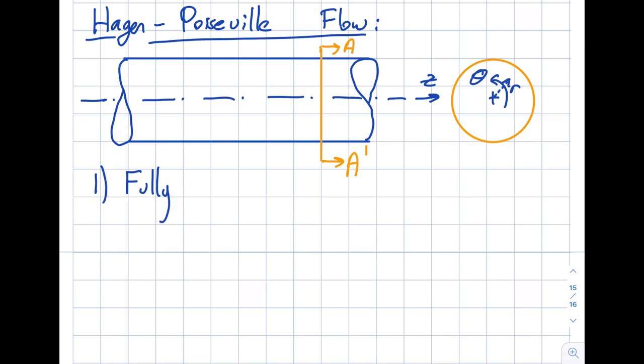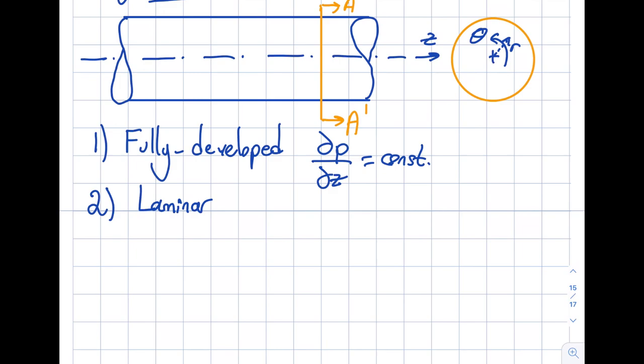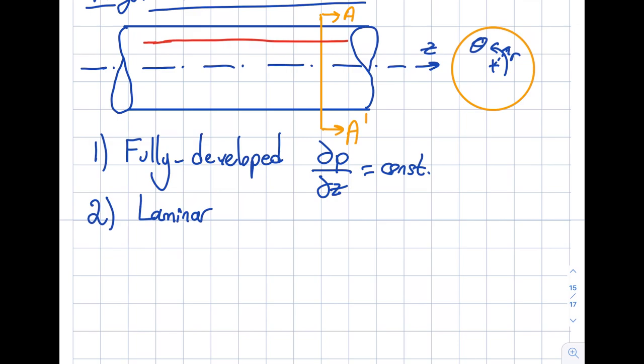Let's look at a few facts I need to analyze this. The first is fully developed flow, and what this enables me to say is that dP/dz will be equal to a constant value. The second thing is I will only be applying this to laminar flow, which means that if I have a streamline it's going to go like this — V_R will be zero, and V_theta will be zero. There will be no rotation; streamlines are just going in and out. V_Z is not equal to zero — that's actually what I'm trying to find.